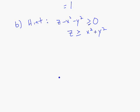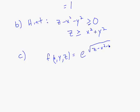And then for part C, we want to just find the range. So remember, the function is f(x, y, z) equals e to the square root of z minus x squared minus y squared. The smallest number I can think of that this exponent will reach is 0. And the exponential function is an increasing function, so the smallest it will get is e to the 0. So e to the 0 is 1, and then it will go up from there. So the range will go from 1 to infinity, including 1.